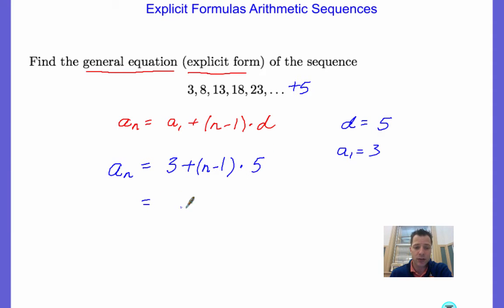Now, it's just algebra. You simplify, so you have 3 plus 5n minus 5. There's the distributive property. You combine like terms, you get 5n minus 2. So that's a sub n.